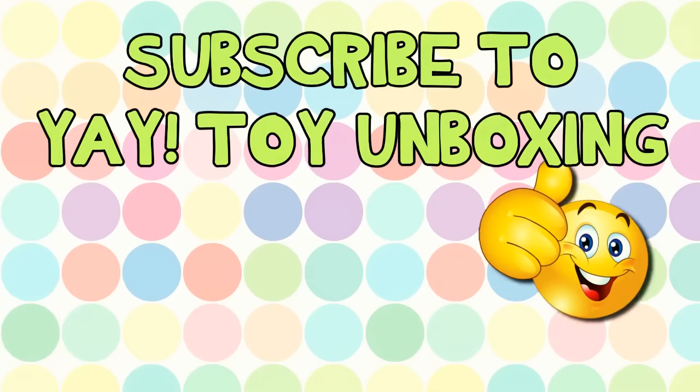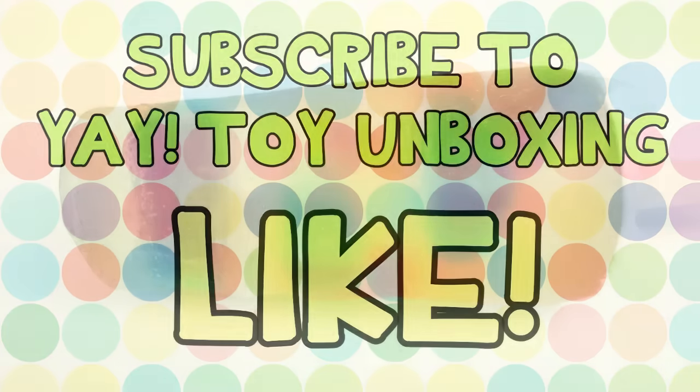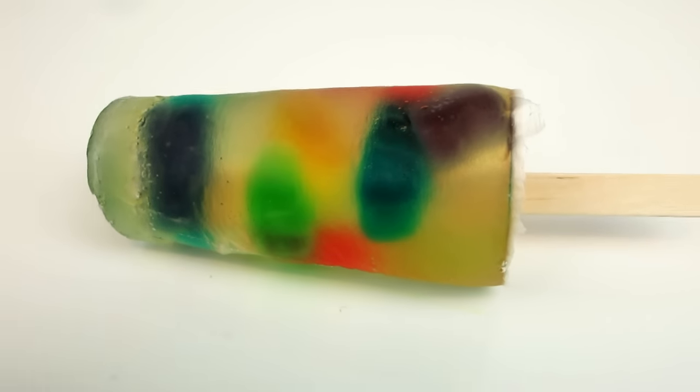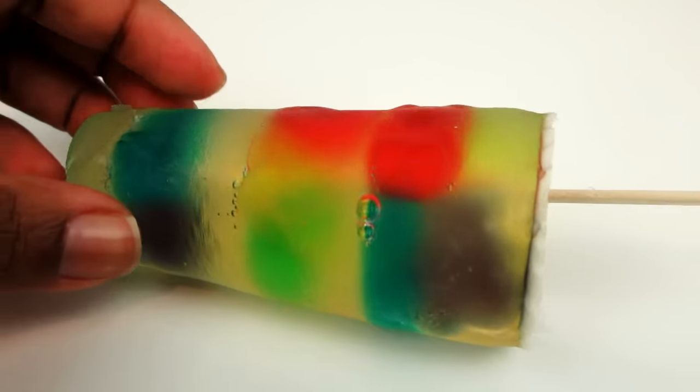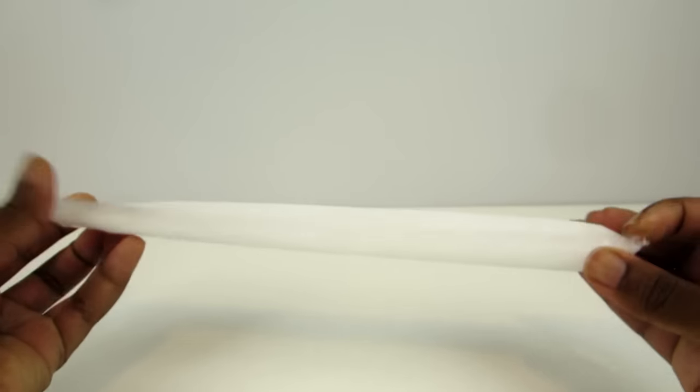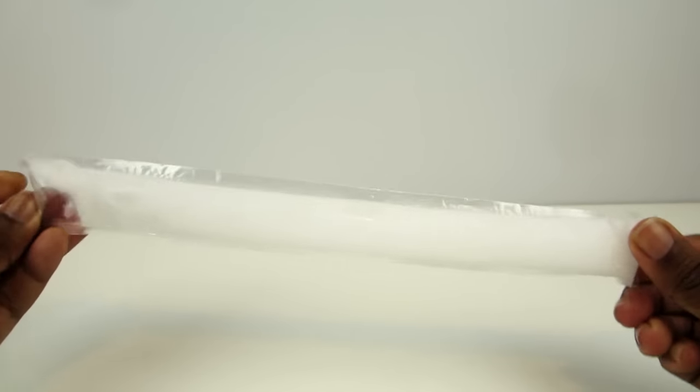It's yay toy unboxing, don't forget to subscribe and like the video. Hi guys, today I'm going to show you how I made this jelly popsicle with gummy bears. Do you love freezies? I do. So I used a white freezy, but I didn't use a frozen one, I used one that was liquid.